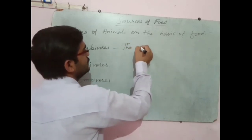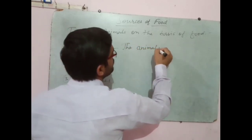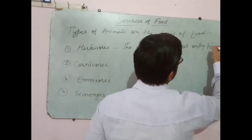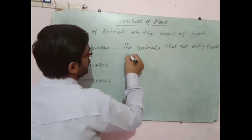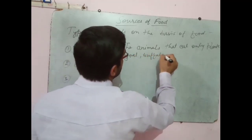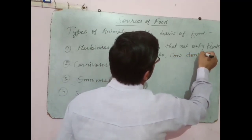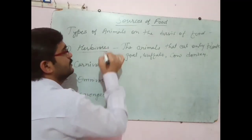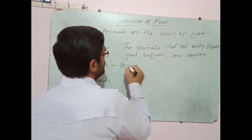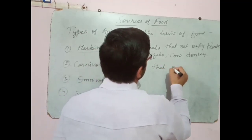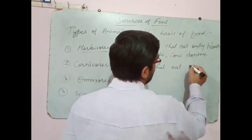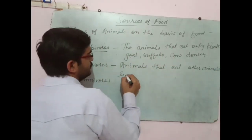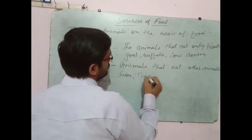First is herbivores — the animals that eat only plants and their products. That's why they are known as herbivores. Second is carnivores — animals that eat other animals, like lion, tiger, etc.